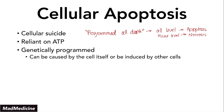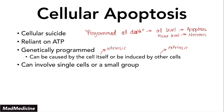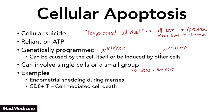Apoptosis can be caused by the cell itself — meaning intrinsic — or it can be induced by another cell, meaning extrinsic. These are mechanisms we have developed to make sure we don't have infected or rapidly growing cancer cells. Apoptosis involves either single cells or a small group of cells; when tissues are dying, that is called necrosis. Examples of apoptosis include the endometrial lining that sheds during menses, CD8-positive T cell-mediated cell death when T cells kill infected cells (extrinsic), and embryogenesis, where many structures are removed through apoptosis rather than necrosis.